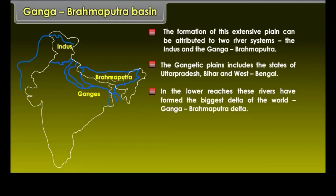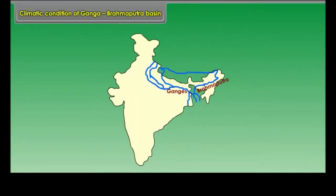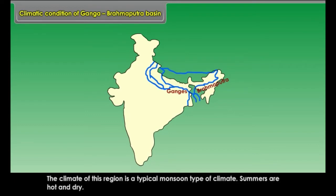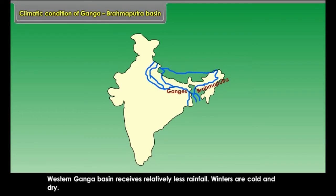The Ganga-Brahmaputra Basin has a rich layer of alluvial soil, and due to the deposition of alluvial soil, the Ganga-Brahmaputra Basin has become most fertile. The climate of this region is a typical monsoon type of climate. Summers are hot and dry. The rainfall is heavy in the Brahmaputra Basin and in the eastern Ganga Basin, while the western Ganga Basin receives relatively less rainfall. Winters are cold and dry.